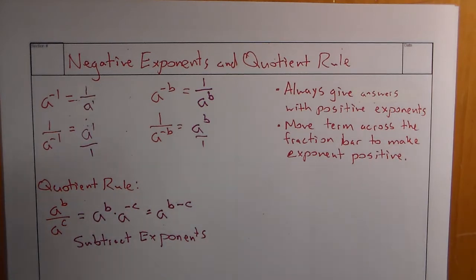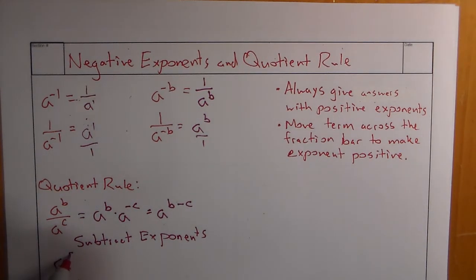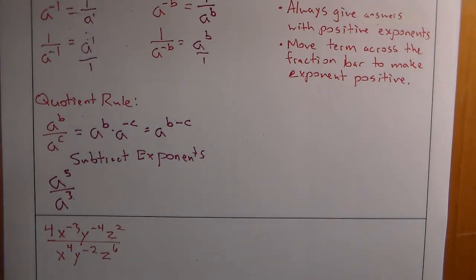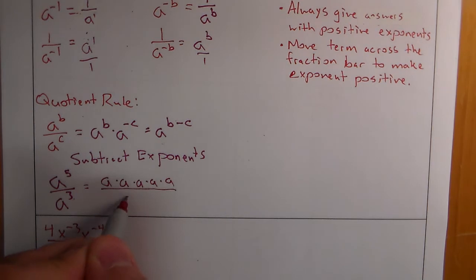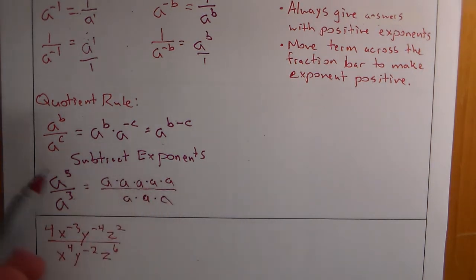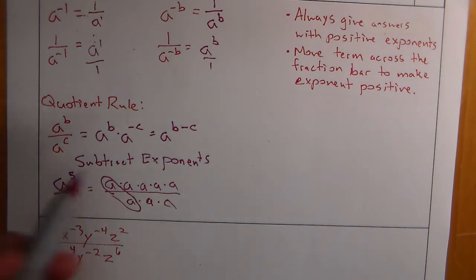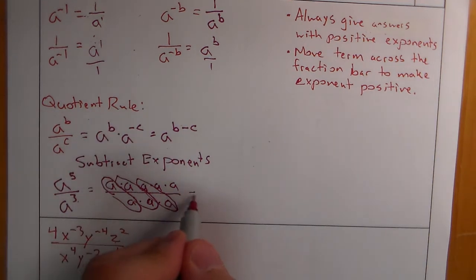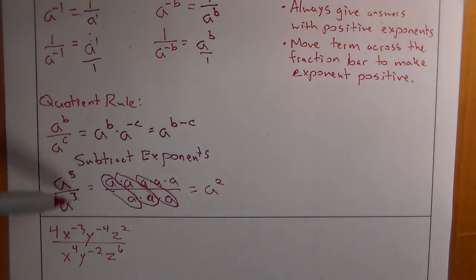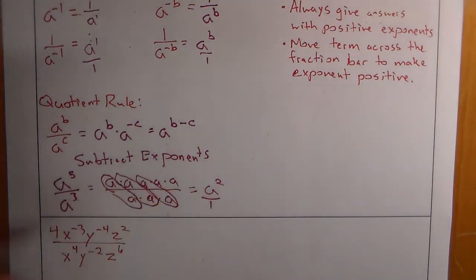Let's look at a to the fifth over a to the third. I could subtract and do 5 minus 3. But we can also say this means we have 5 a's over 3 a's, and a over a equals 1 — three times over — leaving us with a squared, which is 5 minus 3. Sometimes it's easier to ask: which side, top or bottom, has more, and by how many? That's finding the difference and keeping the remaining terms.